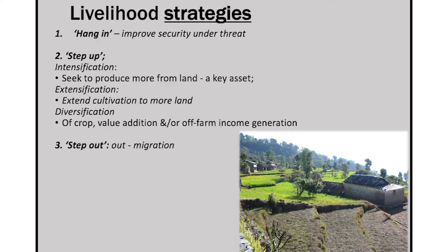The second kind of strategy is what we call 'step up' — you're trying to improve. In Scoones' terms, there are three possible ways: one is intensification, where you seek to produce more from land. You may have a well or a source of irrigation, so you grow not just the monsoon crop but a second winter crop and potentially a third summer crop. Extensification means cultivating more land than what you have — purchasing or leasing in more land. And then diversification of crops itself: food crops, cash crops, value addition.